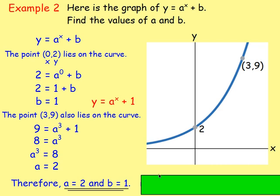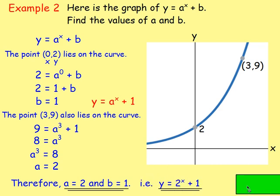So we know a is going to be 2 and b is going to be 1. Sometimes you might be asked to write down the equation — if so, you would say y equals 2 to the power of x plus 1. But here it's just asking for a and b.